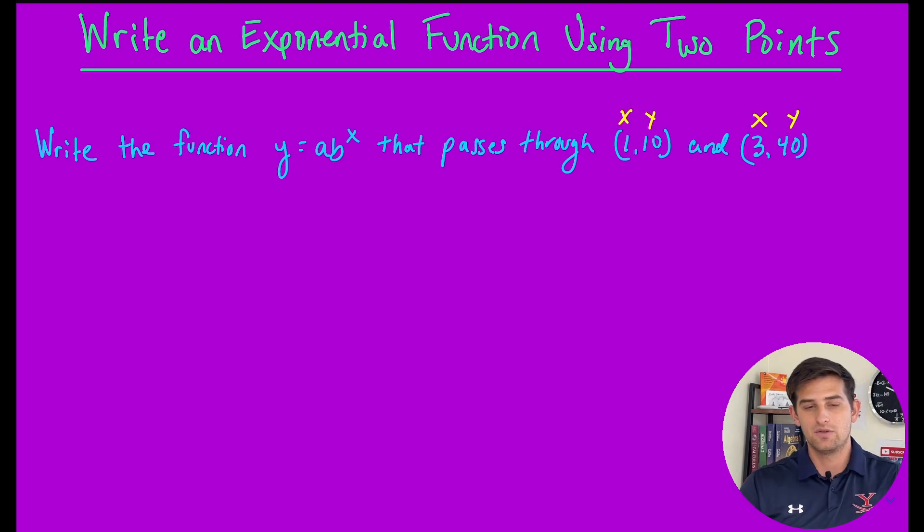We can use both of those points and write two separate equations to help us figure out what our function should be. Starting with the form y equals a times b to the x, I'm going to plug in 10 for y.